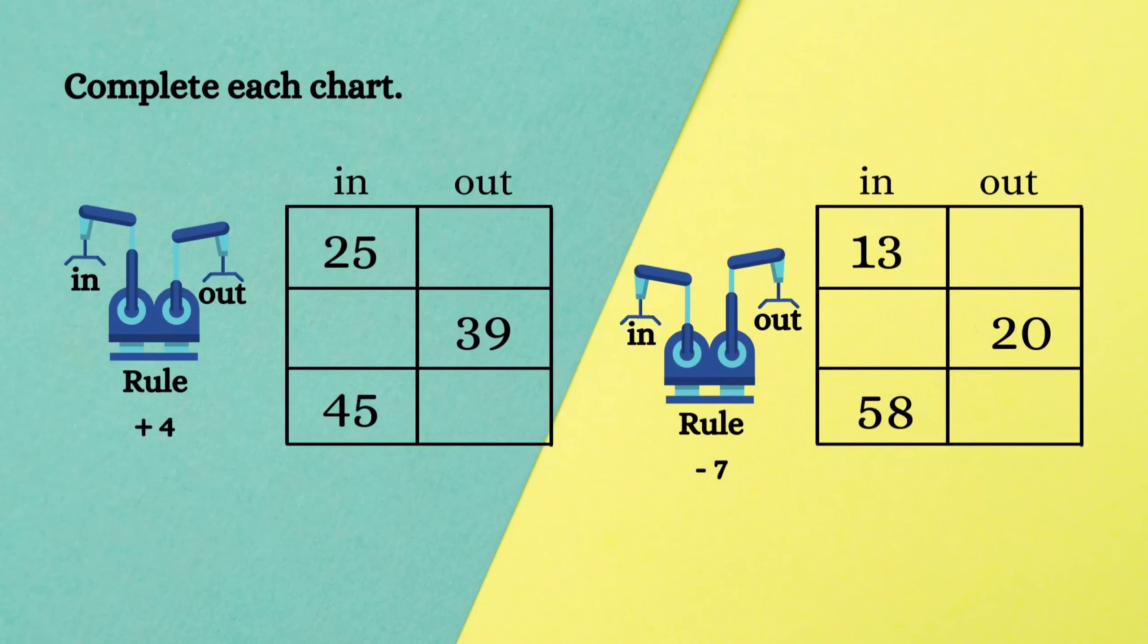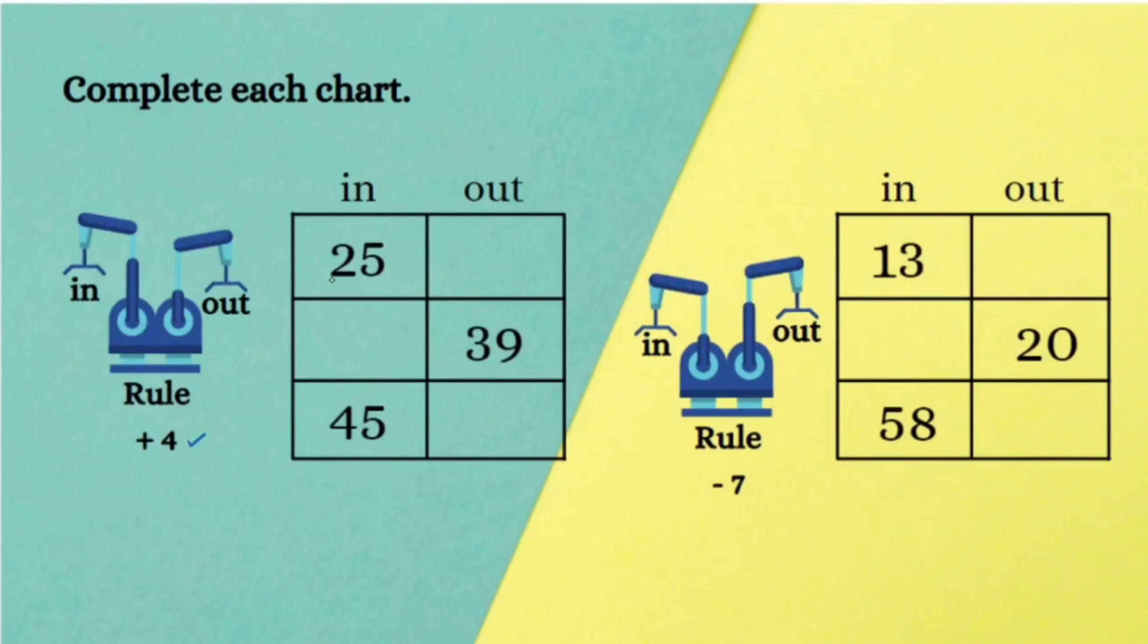The second worksheet is using the given rule to complete each chart. In the first machine the rule is adding 4: 25 plus 4 is 29, 35 plus 4 is 39, 45 plus 4 is 49. Likewise in the second machine the rule is subtracting 7: 13 minus 7 is 6, 27 minus 7 is 20, 58 minus 7 is 51.